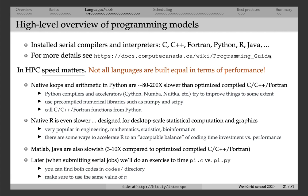One of the exercises we're going to do in this course is benchmarking scripting and compiled codes. You're going to take a code to compute Pi in C and in Python, run it as a compute job on our training cluster, compare the runtimes, and you will find that the C code is much, much faster than exactly the same Python code.